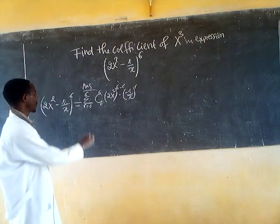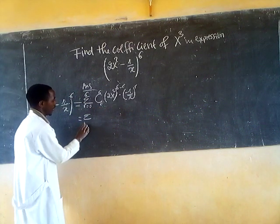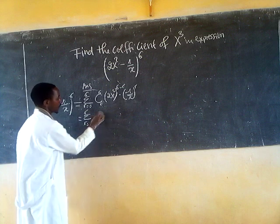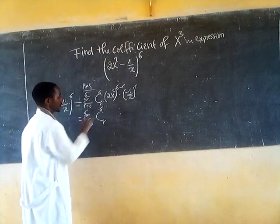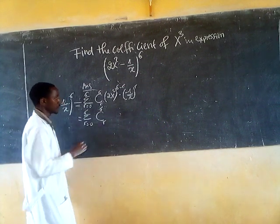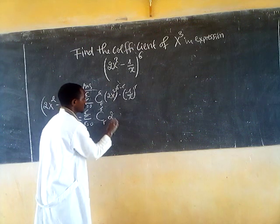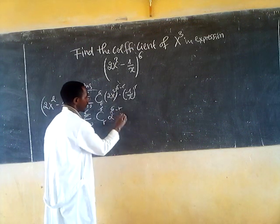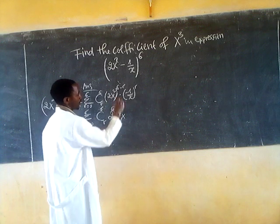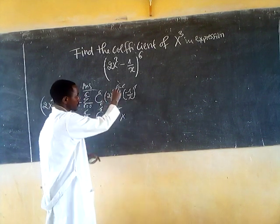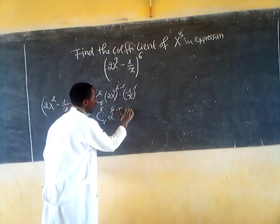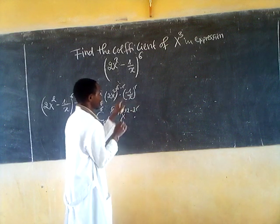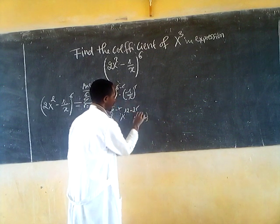How do we express this? The general term is the summation from r equals 0 to 6 of: combination of 6 choose r, times 2^(6 minus r), times x to the power of 12 minus 2r, times (-1/x)^r.